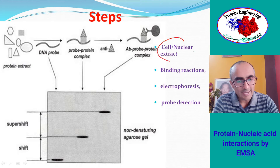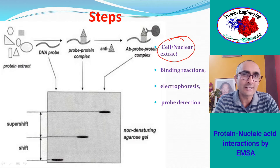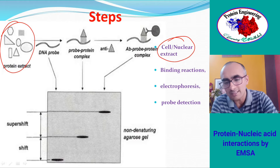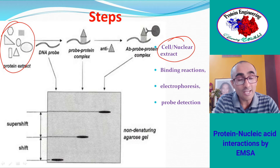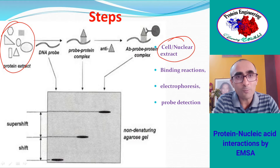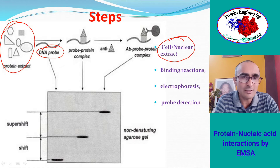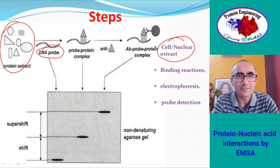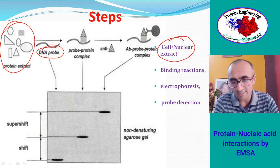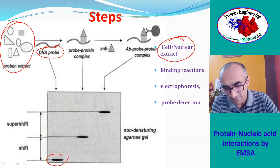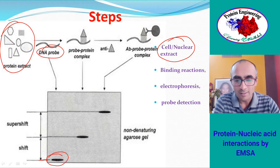There are four steps of EMSA. In the first step, a cell or nuclear extract — protein extract from the nucleus — is prepared. You also have a DNA probe: a DNA or RNA sequence for which you are looking for binding partners in the extract. This DNA probe is generally labeled with radioactivity. When you run electrophoresis and perform autoradiography, you can see the probe migrating at a low molecular weight position when it is alone.